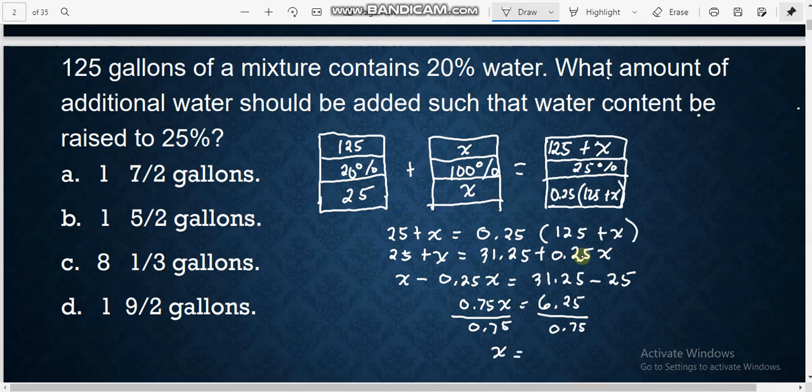Our x is equal to 8.333 and so on. If you're going to convert that into fraction, since as you can see the choices are all fractions, 8.333 converts to 8 and one-third gallons, and obviously that is letter c.